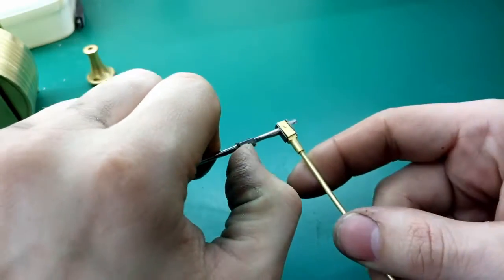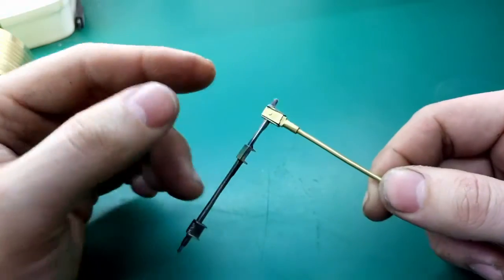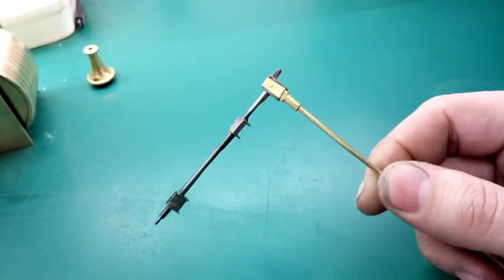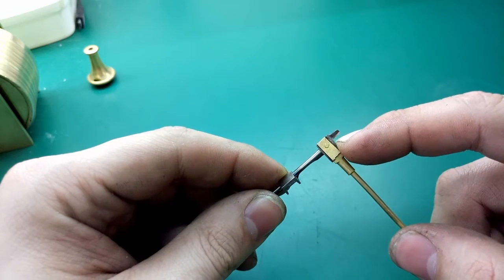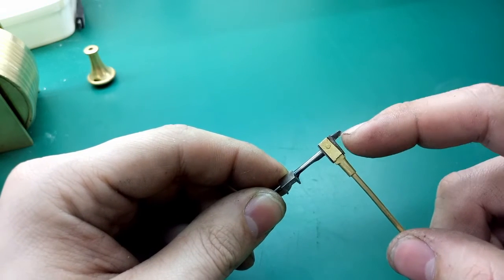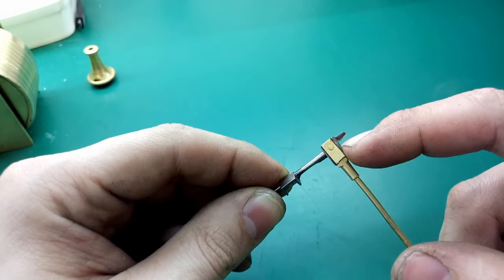This causes problems with the way the pallets interact with the teeth of the crown wheel. So basically what we need to do is add more material to or completely remake this knife edge and bring it back down onto center.